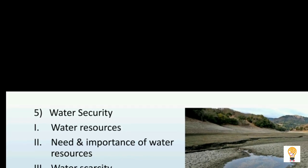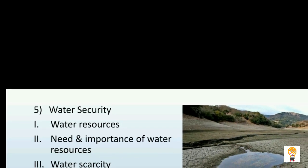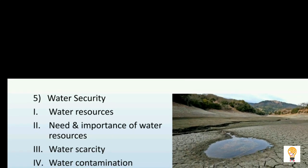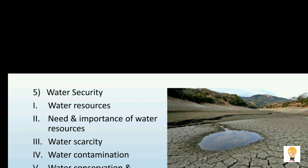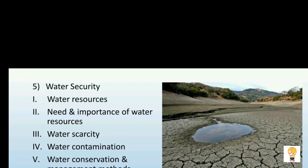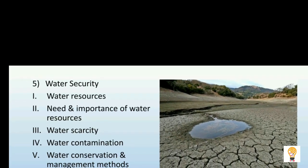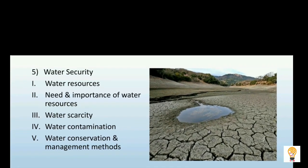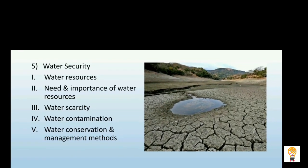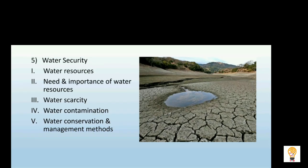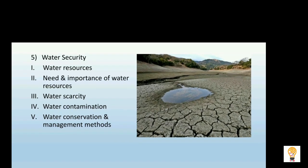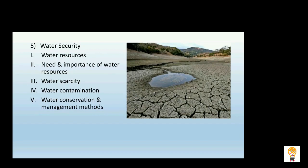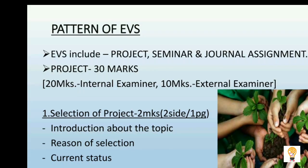The fifth and last chapter in environmental education and water security is water security, which consists of subtopics all related to water, i.e. Jalsuraksha. The subtopics are: water resources, need and importance of water resources, water scarcity, water contamination, and water conservation and management methods.